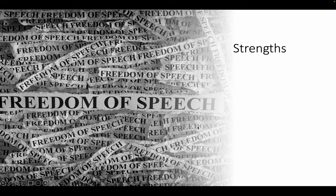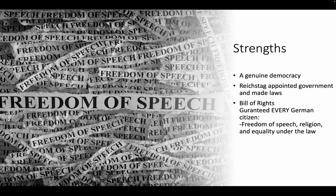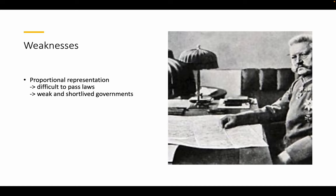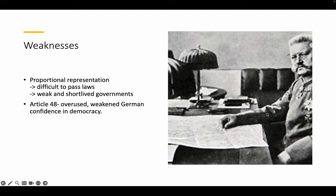The strengths of the Weimar constitution included freedom of speech, a genuine democracy, and a bill of rights guaranteeing every German citizen freedom of speech, religion, and equality under the law. However, it had many weaknesses. Proportional representation made it difficult to pass laws, leading to weak and short-lived governments. Article 48 was overused and weakened German confidence in democracy — the Republic talked endlessly about democracy, but article 48 could abolish it in an instant. The concern remained whether the German people would actually accept it.